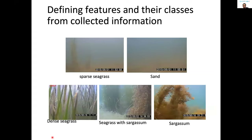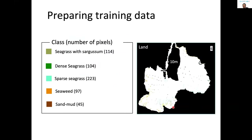After obtaining the seafloor information at each sampling point, we have to define features and their classes from the collected information. In this case, I defined five classes: sparse seagrass, sand bottom, dense seagrass, seagrass with sargassum, and sargassum. Based on this information, we prepared training datasets.